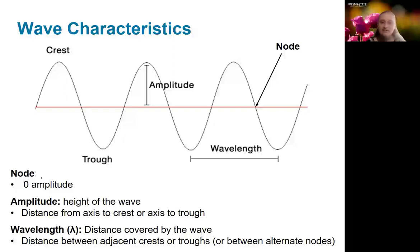Nodes are areas where the wave crosses the axis, or basically where the function is zero. The amplitude is the height of the wave, and it goes from the axis to the minimum, which is the trough, or the maximum, which is the crest.